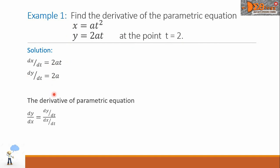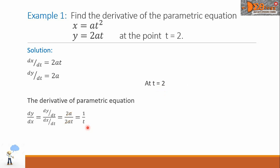Now, the derivative of the parametric equation is given by dy over dt all over dx over dt. Substituting the corresponding values, we have dy over dt equal to 2a, and dx over dt equal to 2at. We can see there is a common factor in the numerator and denominator that we can cancel — that is the 2a — so the answer simplifies to 1 over t. Now, at t equals 2, substituting gives dy over dx equal to 1 half. This is our final answer.